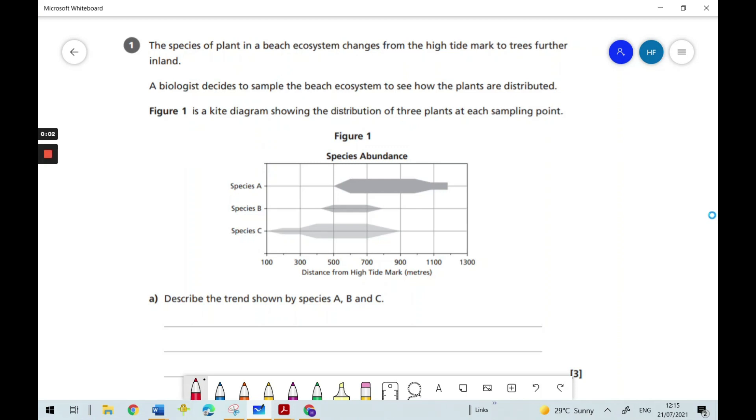Let's have a go at this exam-style question on ecosystems. The question says the species of plant in a beach ecosystem changes from the high tide mark to trees further inland.